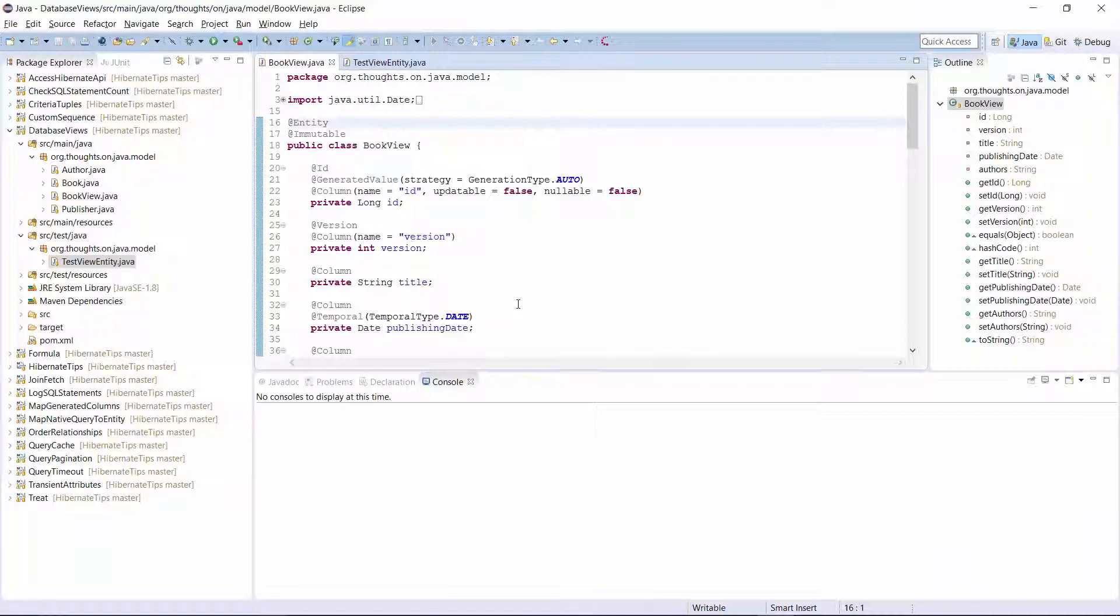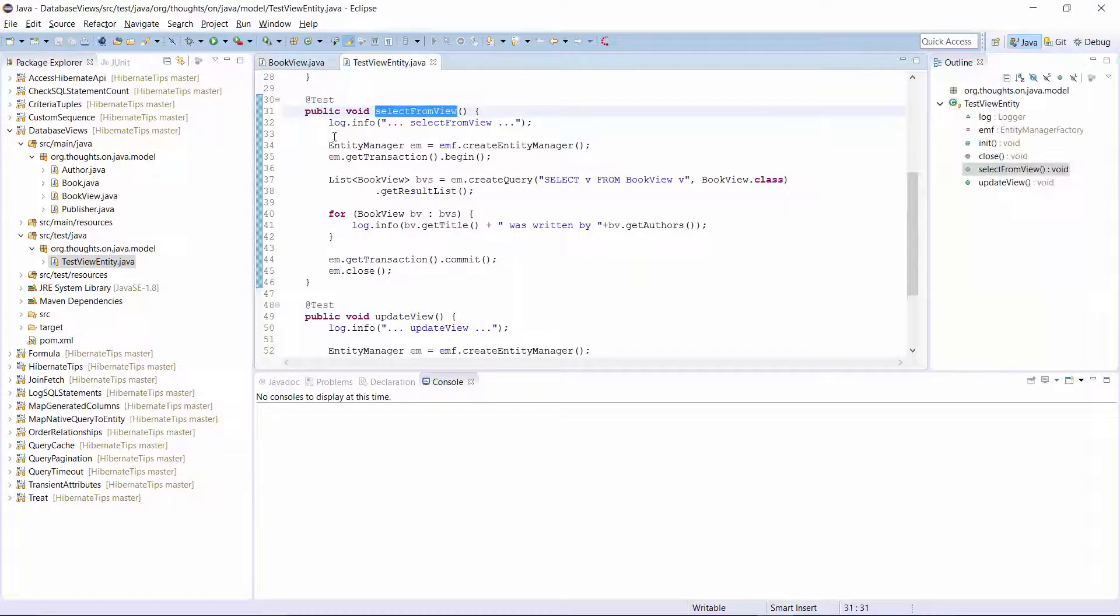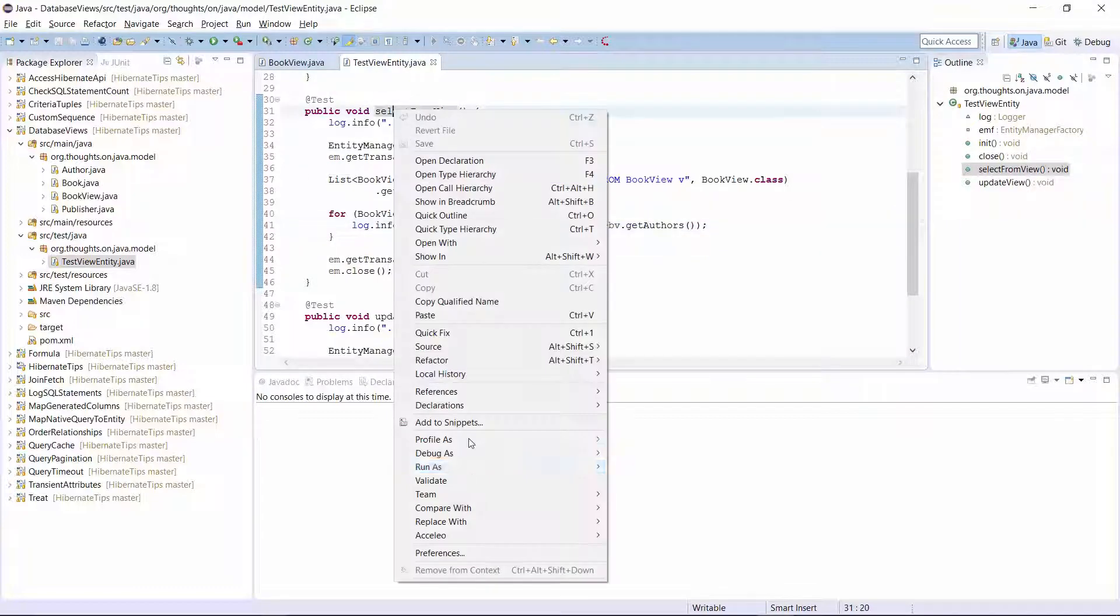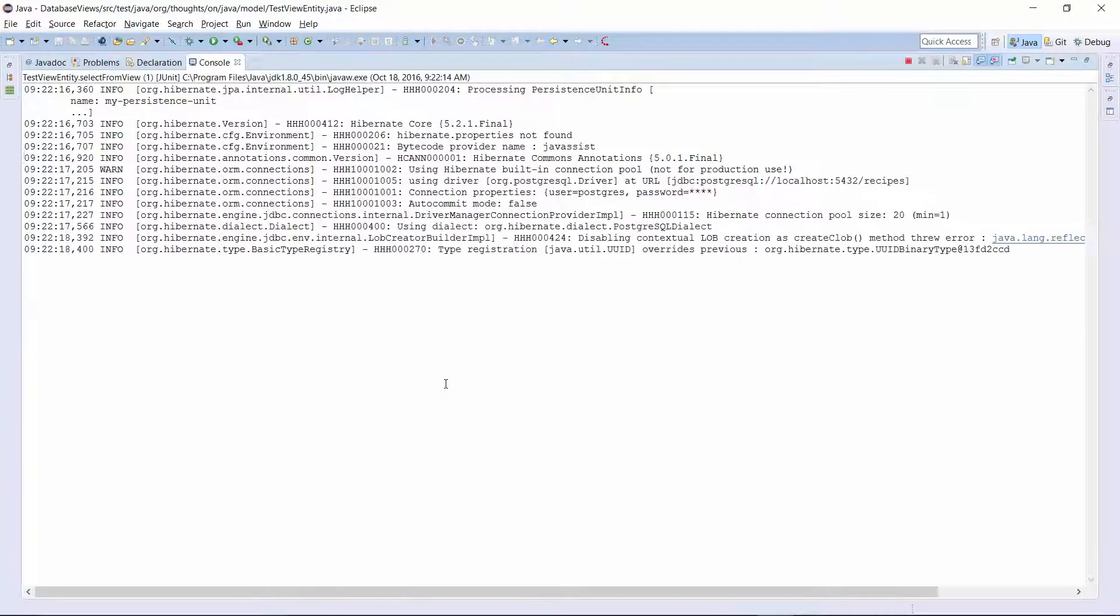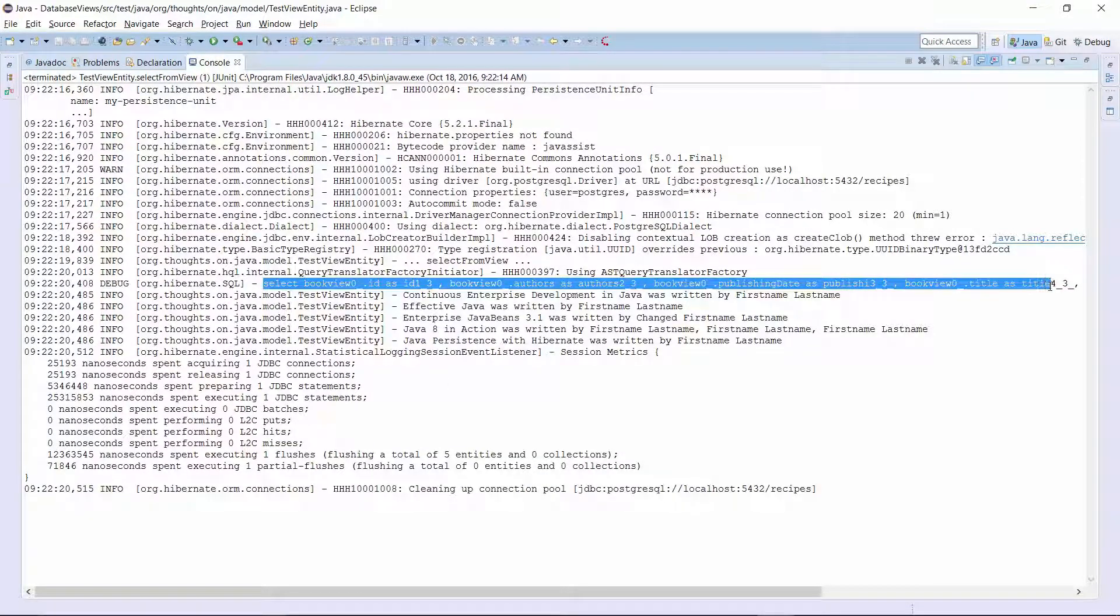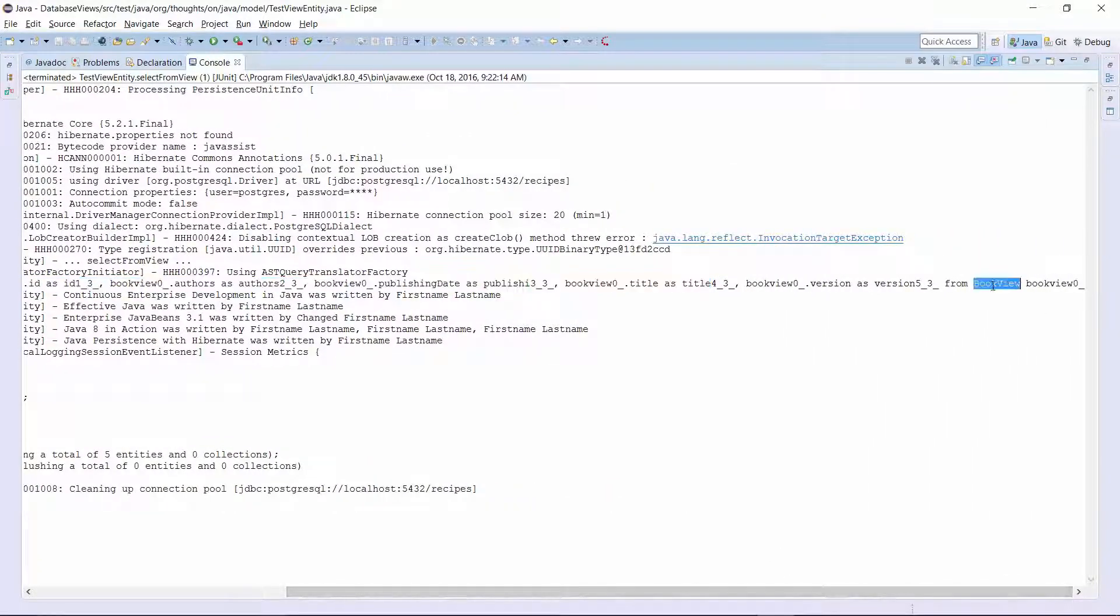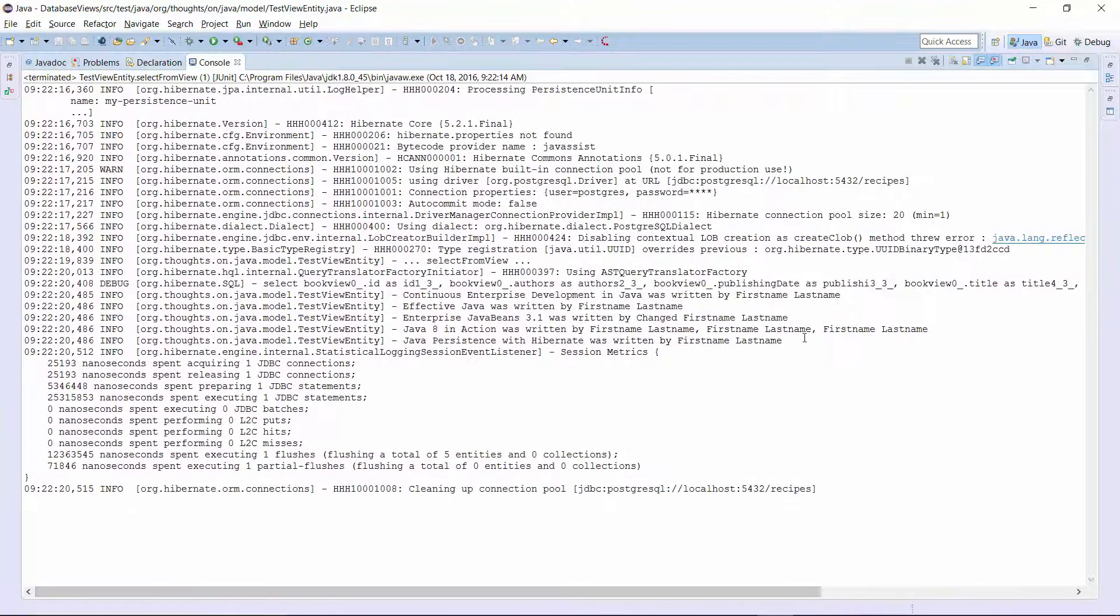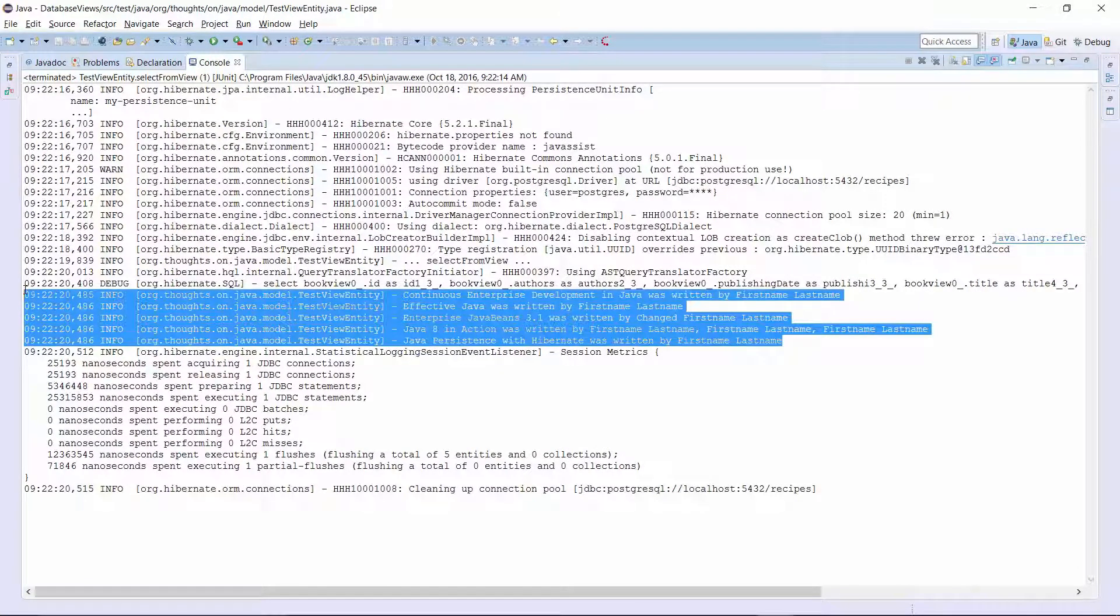Here you can see the BookView entity, which maps the view BookView. I annotated it with Entity and Immutable. That makes it a read-only entity, which you can use in queries and to define relationships. This test case, for example, uses the BookView entity in a simple JPQL query and writes a log message for each entity. As you can see in the log output, Hibernate performed a simple SQL query to select all records from the view BookView. And the following lines show a log message for each selected entity.